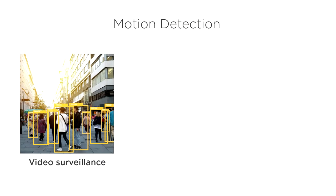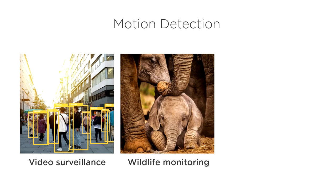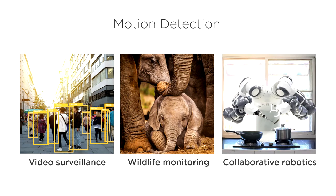Motion detection is useful anytime you need to determine if something is moving within a region of a video. For example, detecting people moving in surveillance videos, monitoring the movement of wildlife on a game preserve, and helping collaborative robots detect humans moving within their workspace.